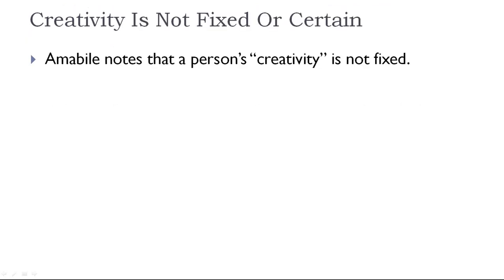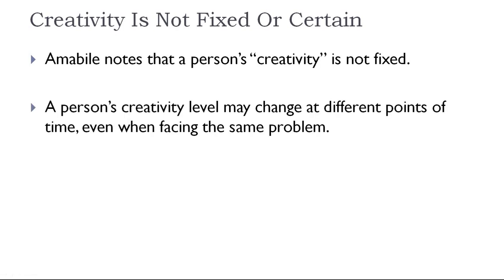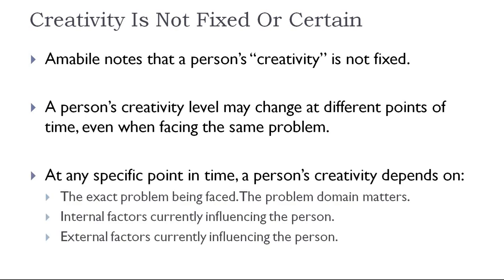One of the key concepts behind the theory is that a person's creativity is not fixed or certain. What this means is that a person's creativity level may change at different points in time even when facing the same problem. At any specific point in time, a person's creativity depends on several different things, including the exact problem being faced. For example, somebody who may be considered creative as an artist may not be able to creatively solve a problem that is in the engineering domain.